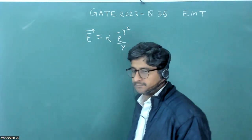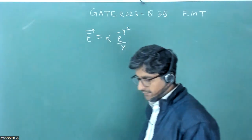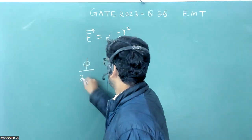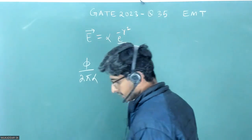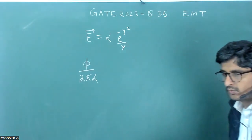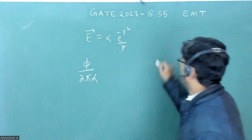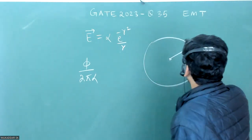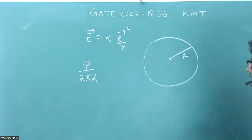We have to calculate the value of flux upon 2 pi alpha. Flux through a sphere of radius, this is a sphere of radius R. You have to calculate the flux through this radius and the radius is also given to be root 2.